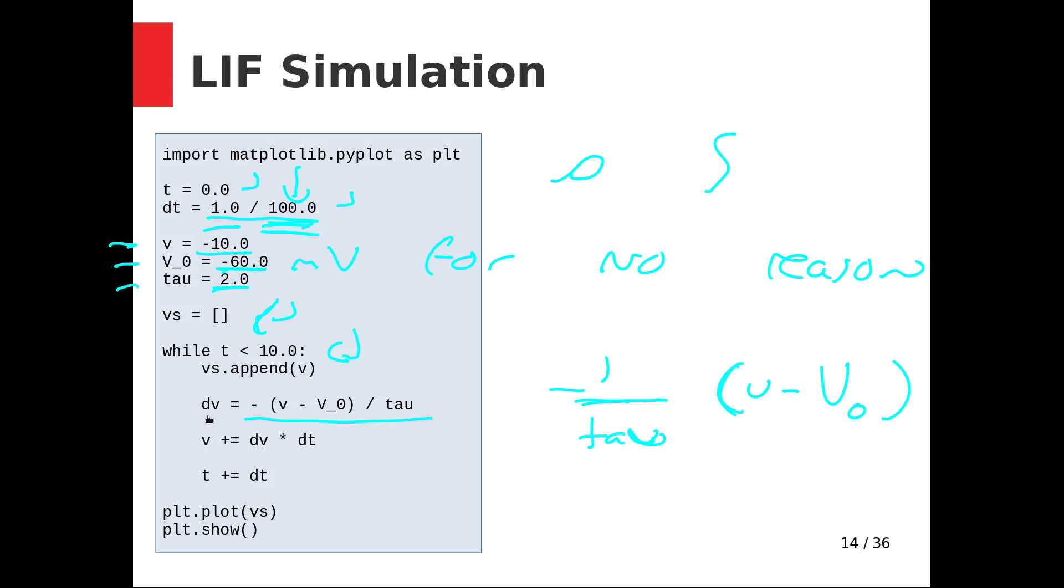There's our update rule: dv equals that, where that is a variable that changes and those are constants that we've defined up here. Then I'm going to multiply it by dt, where dt is the size of my time step.